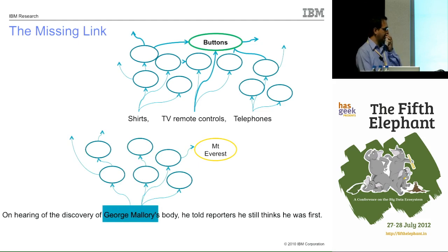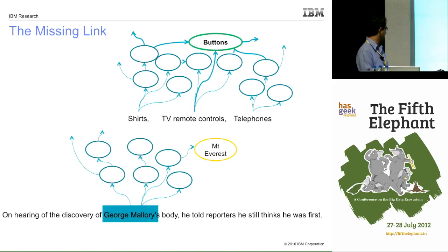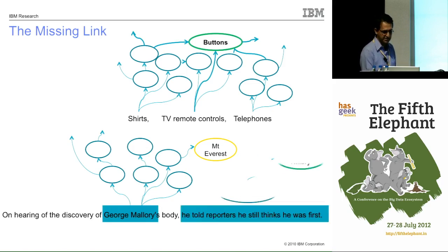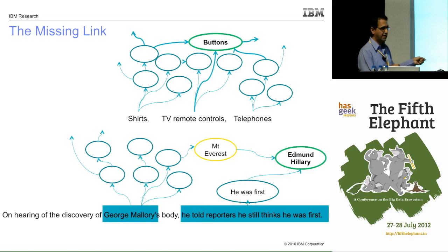Often you don't have text containing all pieces of an answer. For the question 'On hearing of the discovery of George Mallory's body, he told a reporter he still thinks he was first' — the answer is Edmund Hillary — you may not find any single text with all these pieces. You need to piece together a knowledge graph linking George Mallory to Mount Everest and Edmund Hillary to Mount Everest separately.